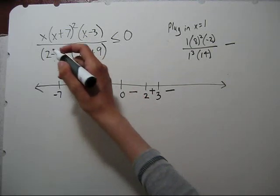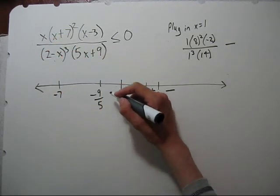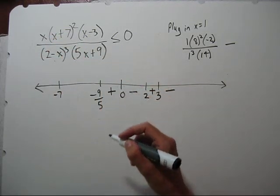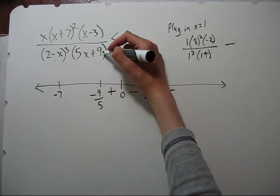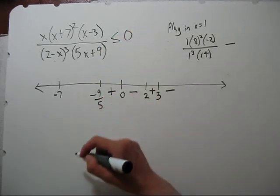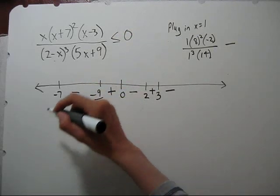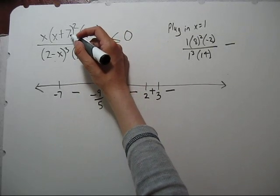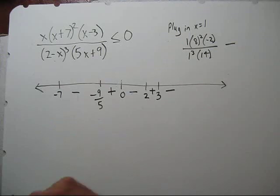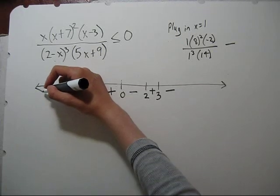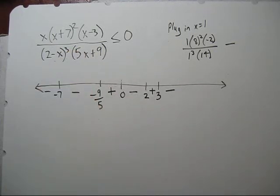Going left, zero comes from this factor. Odd multiplicity, we change sign. Negative nine-fifths, this factor has odd multiplicity, we change sign. And then at x plus seven, that has even multiplicity, so we won't change sign. It'll stay negative.